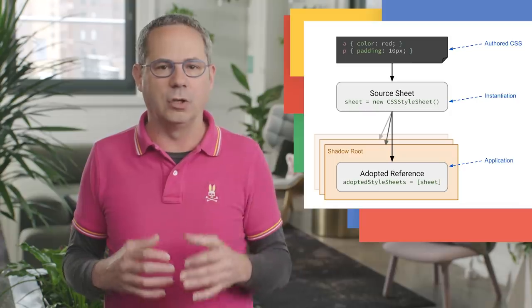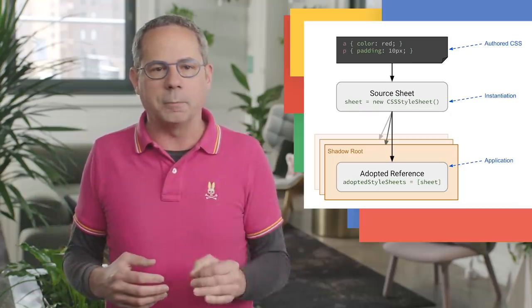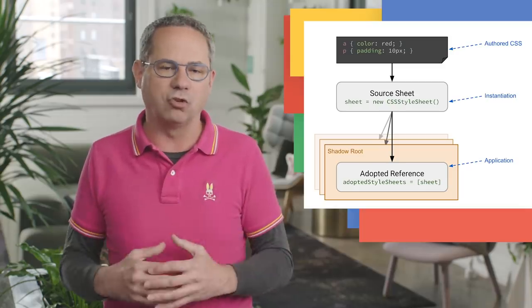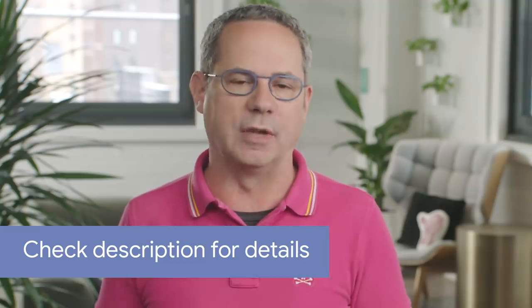Constructible style sheets make it possible to define and prepare shared CSS styles, then apply those styles to multiple shadow roots or the DOM easily and without duplication. Updates to a shared CSS style sheet are applied to all roots where it's been adopted, and adopting a style sheet is fast and synchronous once the sheet has been loaded. To get started, create a new instance of the CSS style sheet, then use either replace or replaceSync to update the style sheet rules. Check out Jason Miller's post for more details and code samples.